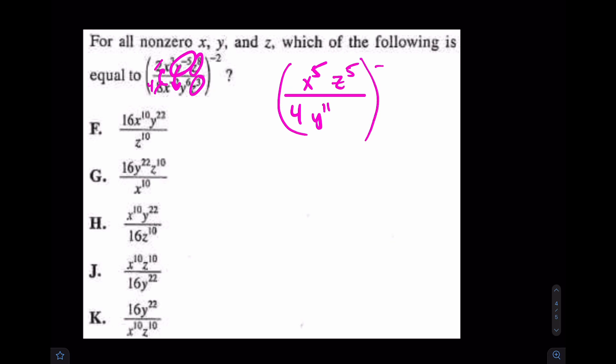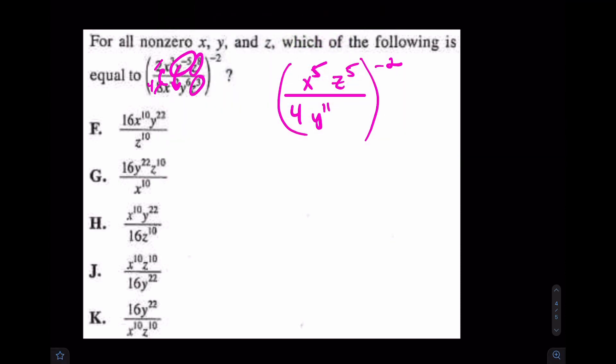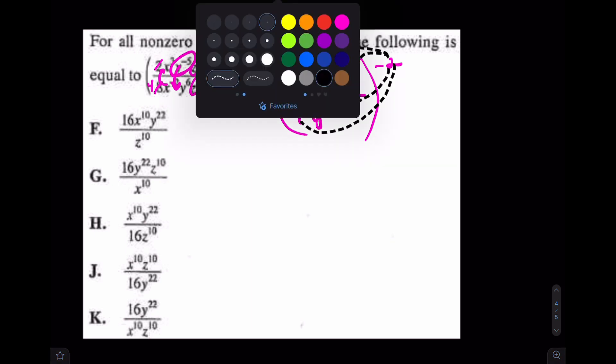All of this to the negative 2nd power. So what's going to happen? What do you do with power of a power? Again, power of a power, it's going to distribute. Essentially, you'll see that this negative 2 will hit here, here, here, and even the 4.